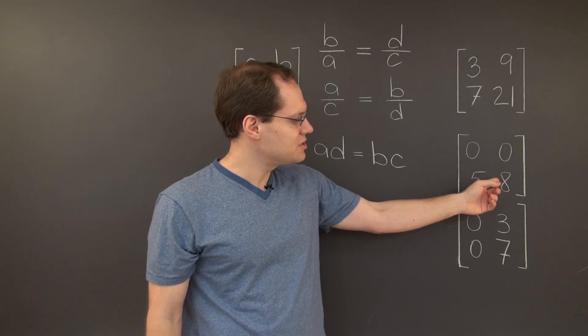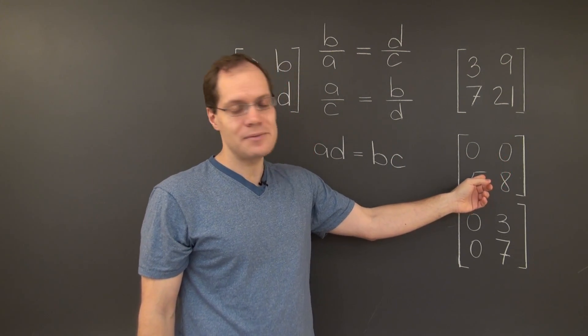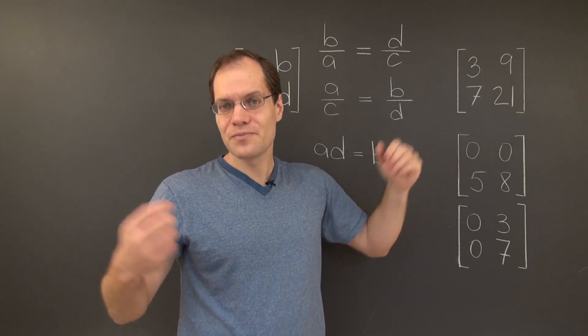In the case of this matrix, we have 0 times 8, equals 0 times 5, 0 equals 0, it works.